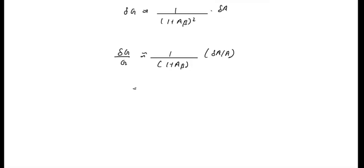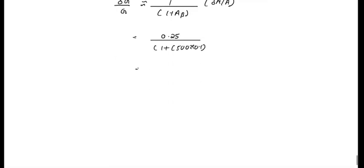Putting the values, this equals 0.25 divided by 1 plus 500 times 0.1, which equals 0.25 divided by 51.